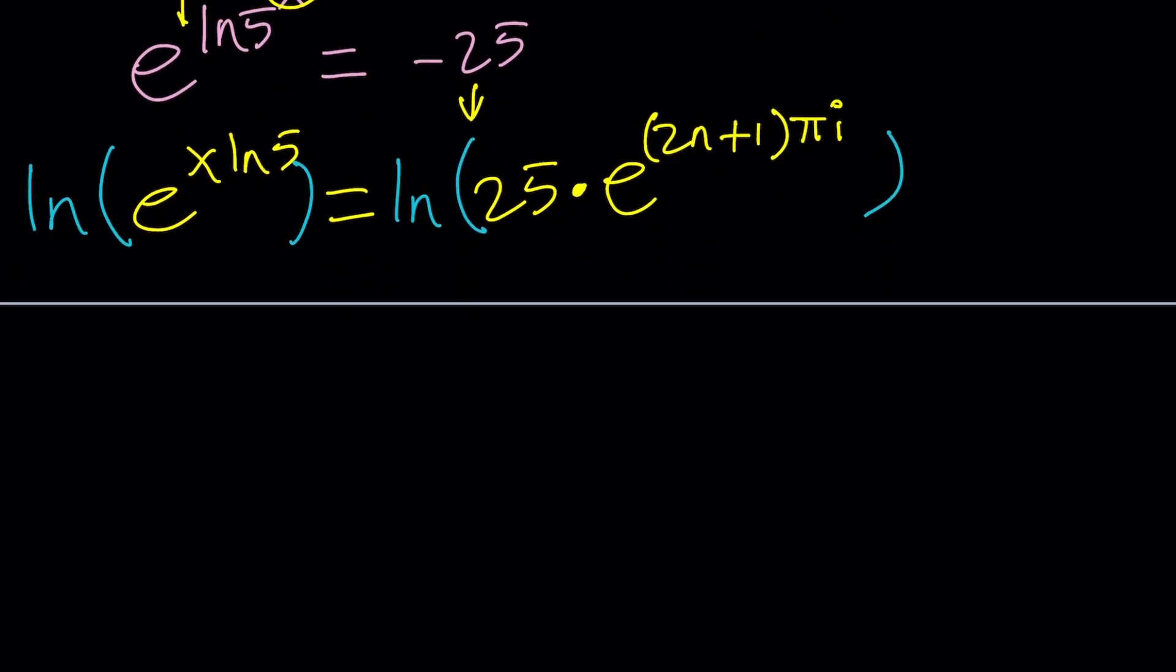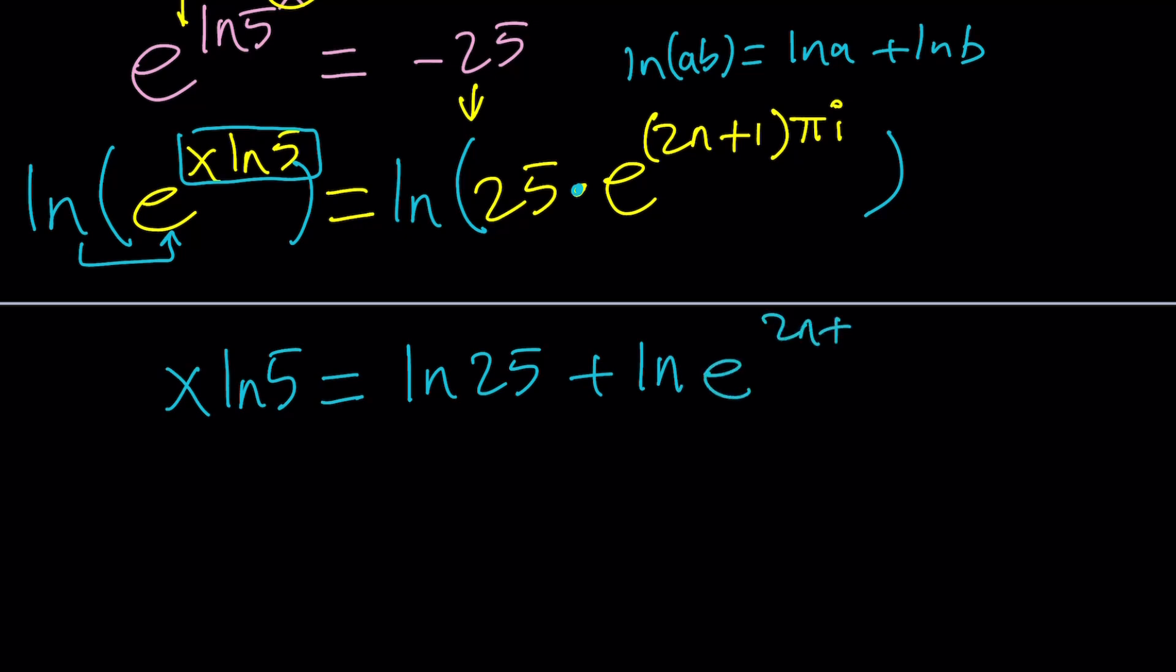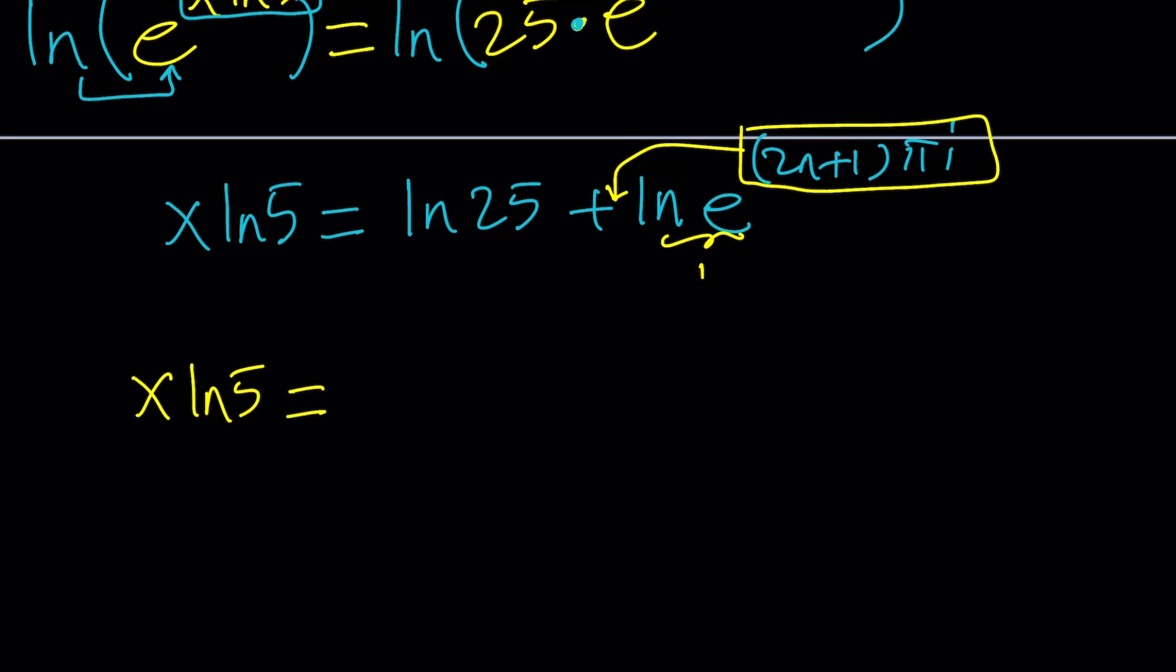Now we're going to go ahead and ln both sides. I'm going to use natural log here and natural log here. And now I'm going to be getting the power rule again. Let's go ahead and move this to the front and ln e is equal to 1. So this gives us x ln 5 equals. Now how do you ln a product? Remember, ln a times b can be written as ln a plus ln b. So we can write the ln of a product as the sum of two ln's. So this can be written as ln 25 plus ln e to the power 2n plus 1 pi i. But again, ln e is equal to 1. So if you go ahead and move this power to the front, that's what you're going to get because this is going to be 1. So we get the following from here. x ln 5 equals ln 25 plus 2n plus 1 pi i.